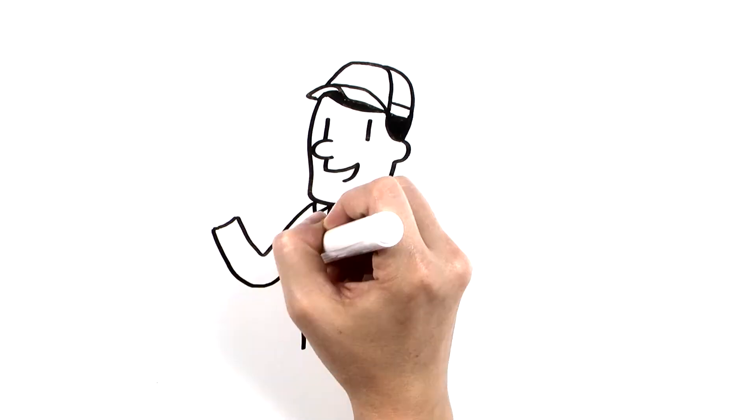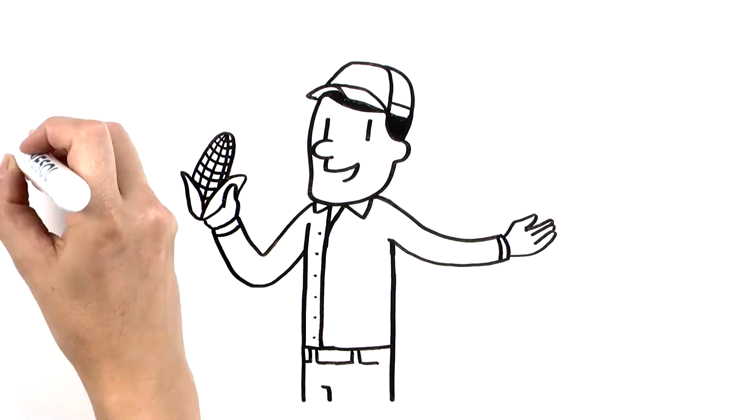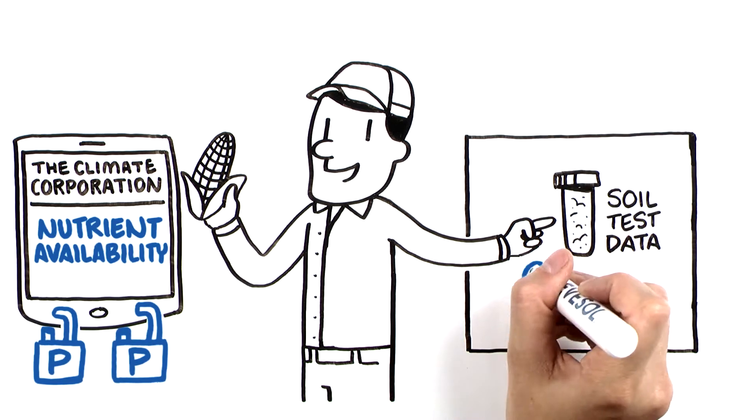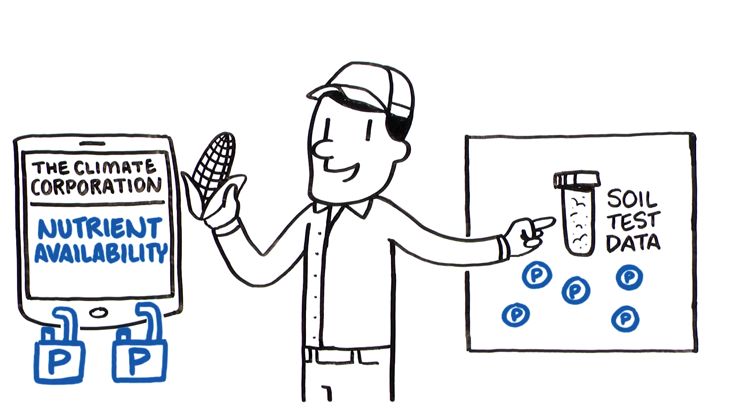By understanding the soil properties that affect nutrient availability identified by the Climate Corporation, we can visualize soil test data and start to address phosphorus availability issues.